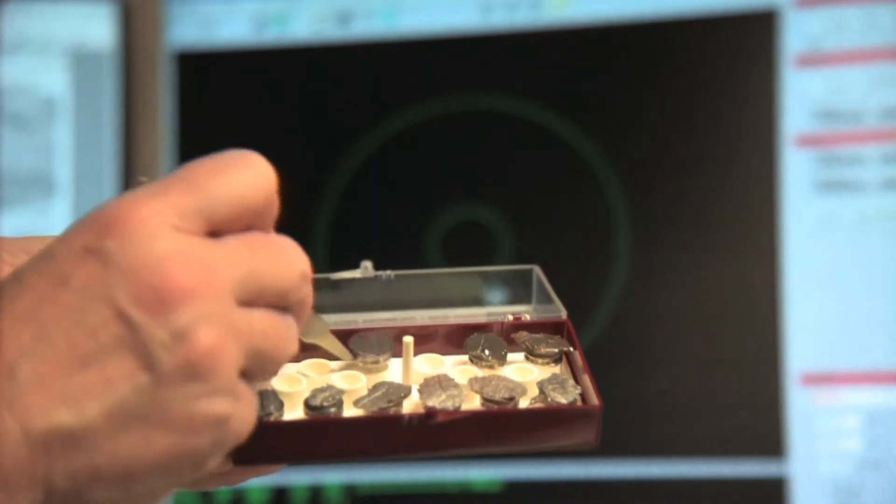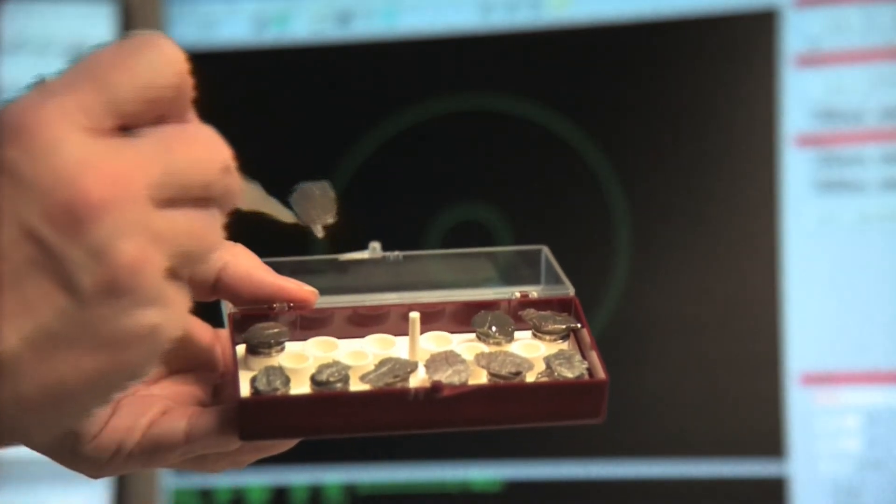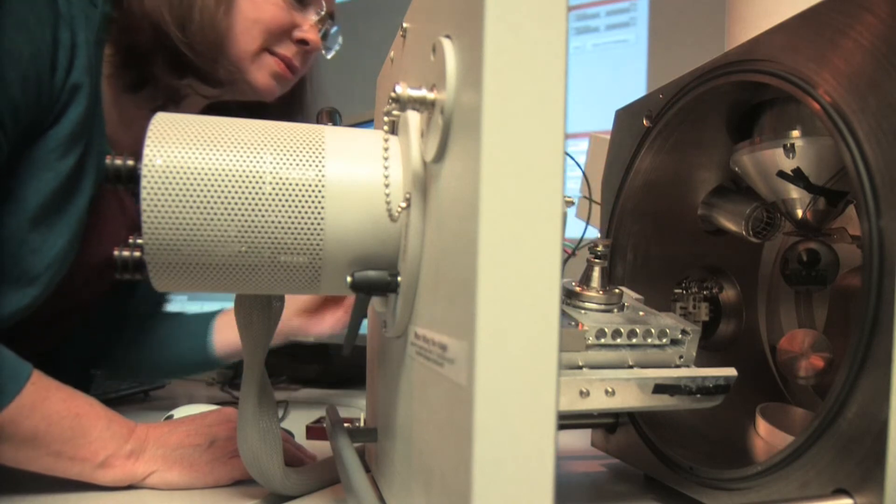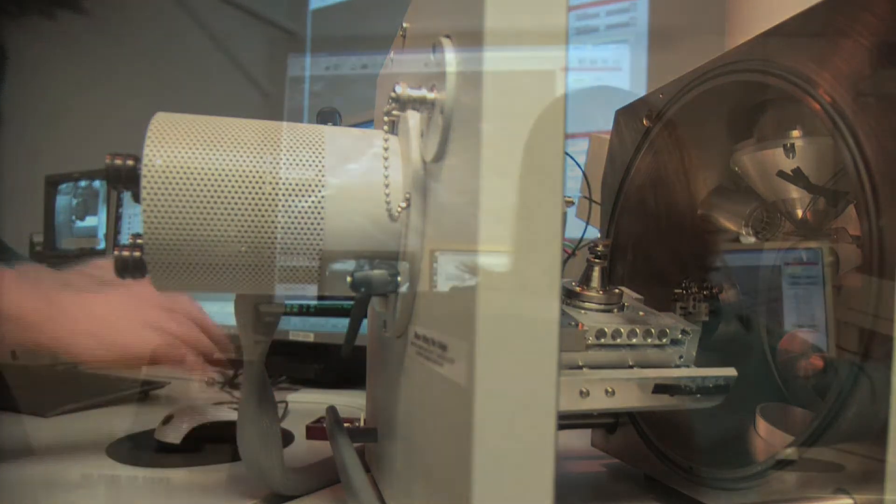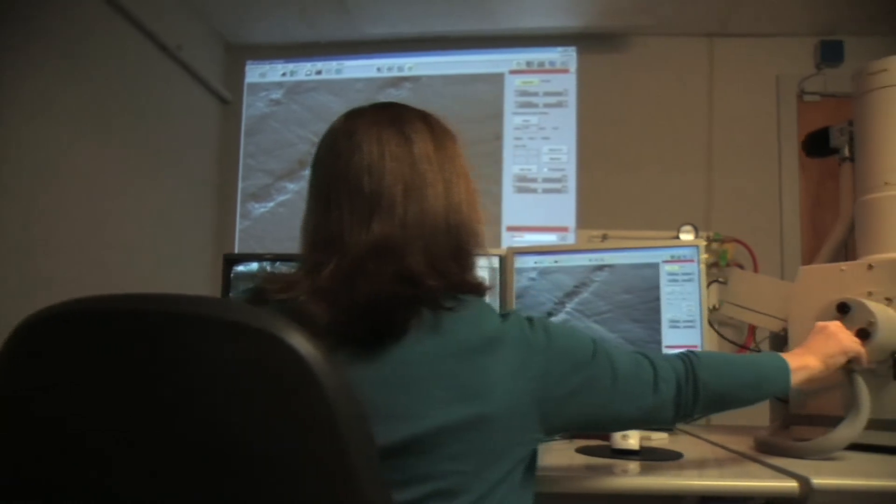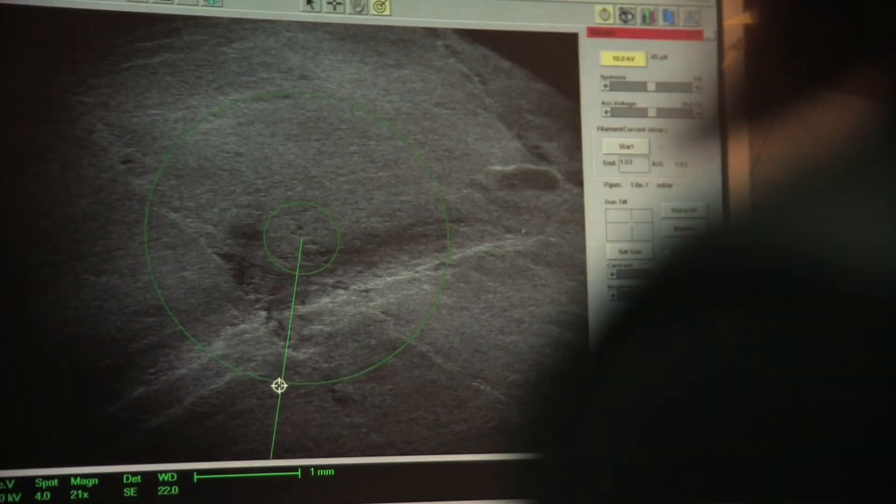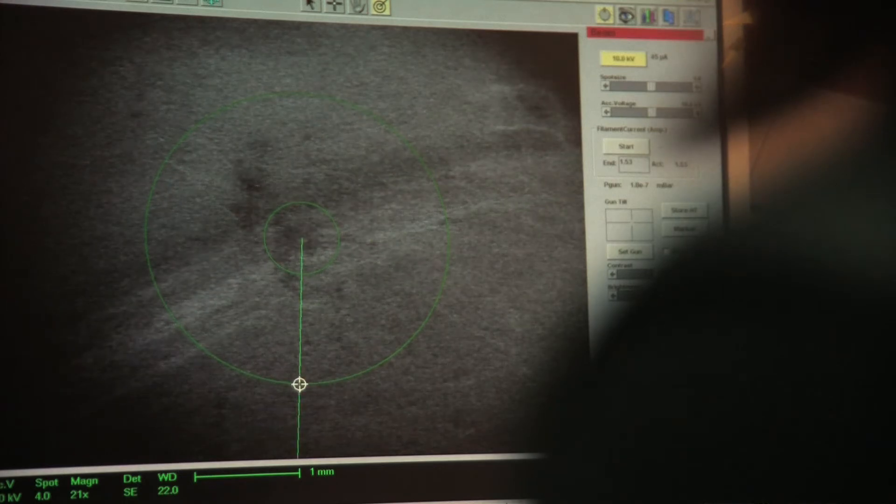We actually have a scanning electron microscope, or SEM, and so we're able to prepare the specimens—the bones that we want to look at or the edges of stone tools—and we're able to then take the molds and casts of those. The powerful scanning electron microscope sends electron beams over the edges and surfaces and is able to create these beautiful images at high microscopic power.